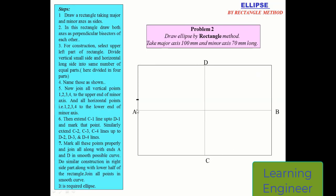The next step is to divide this length into four equal parts — one, two, three, four. This line has been divided and we are marking the points number one, two, three, and four. In a similar way, we will divide this line also from this point to this point into four equal parts — one, two, three, and four.